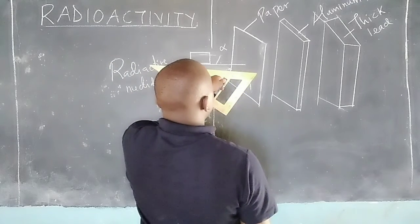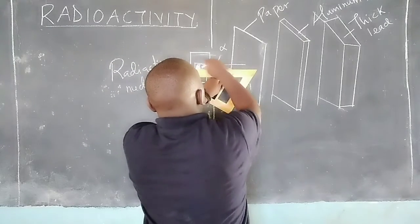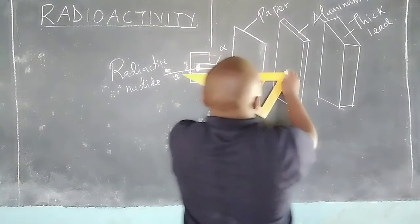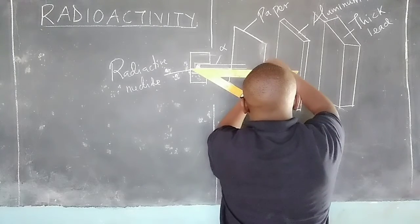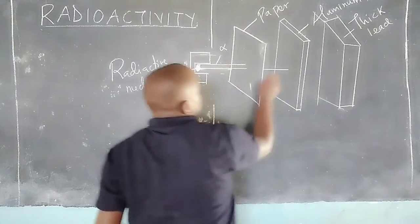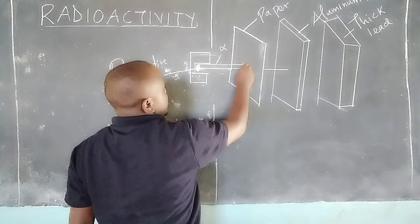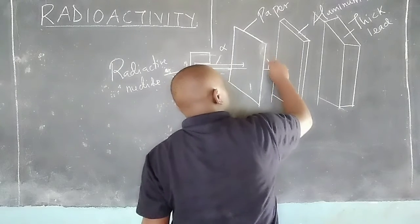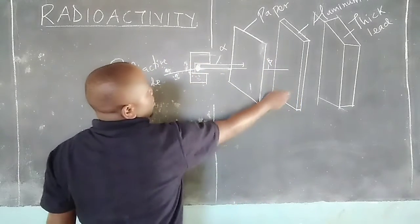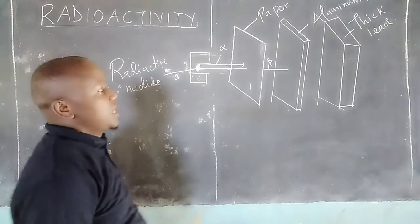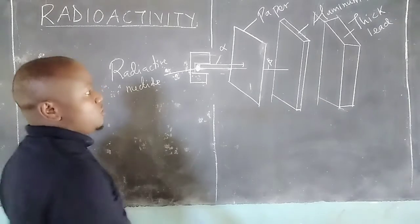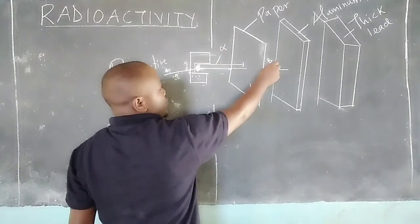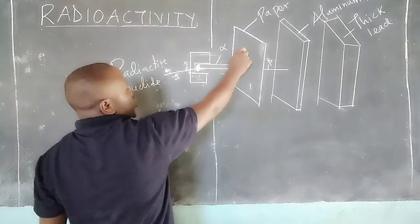Then we have another radiation which goes beyond the sheet of paper and penetrates to the other side. But after penetrating to the other side, it gets blocked — a sheet of aluminium can block it. Alpha particles can be blocked by a sheet of paper.